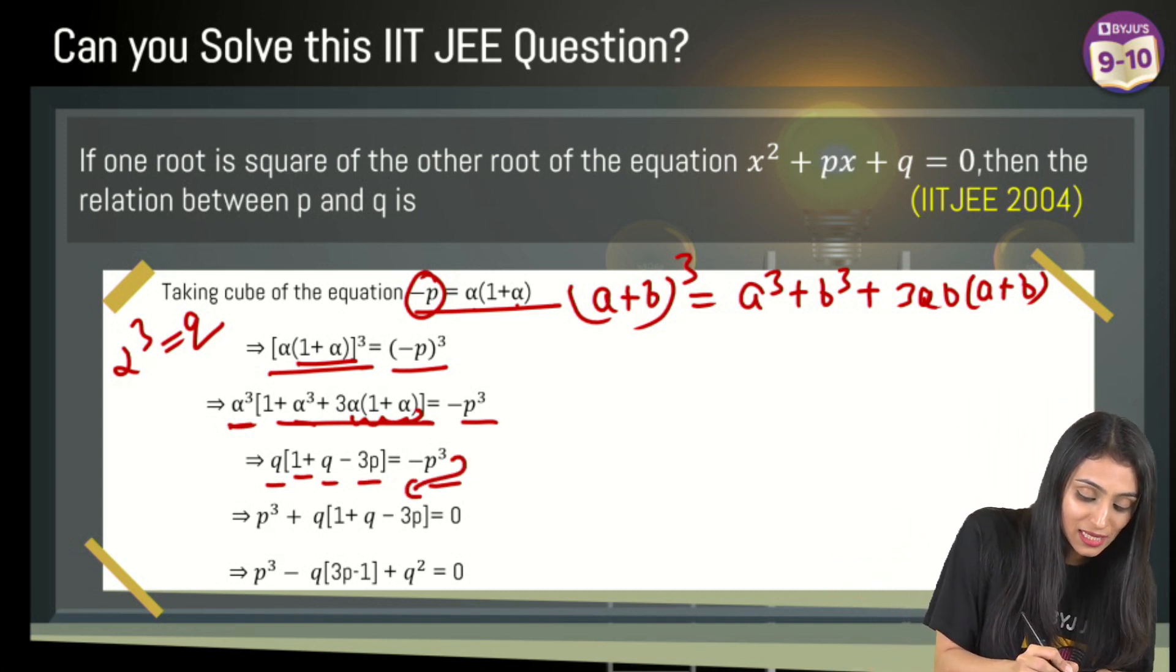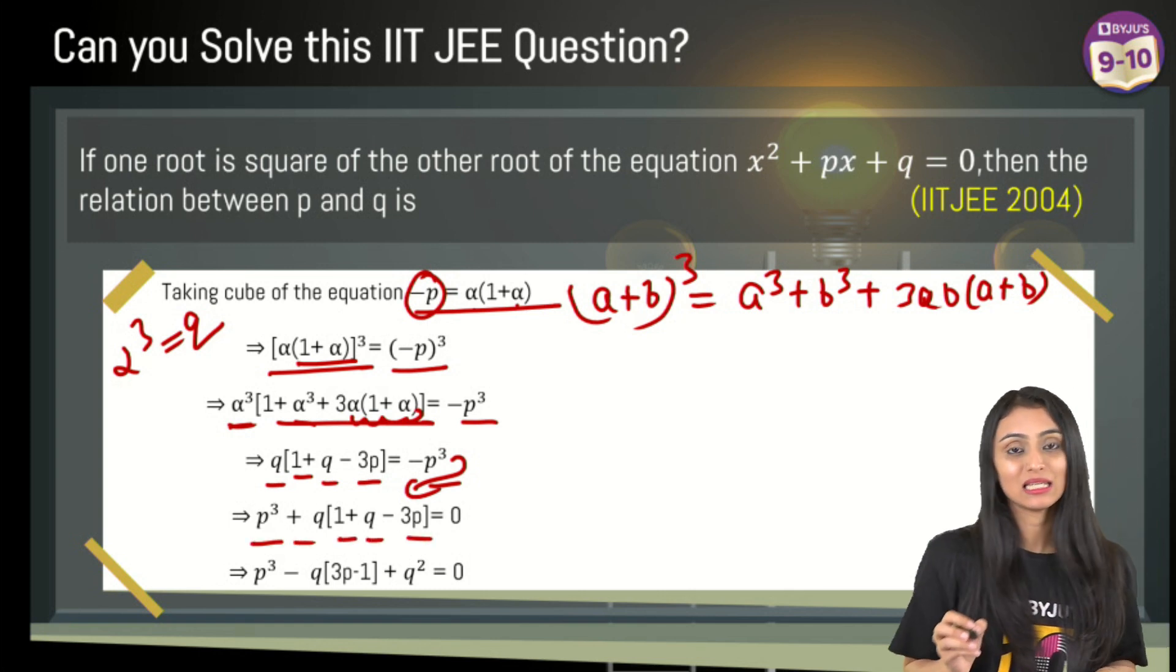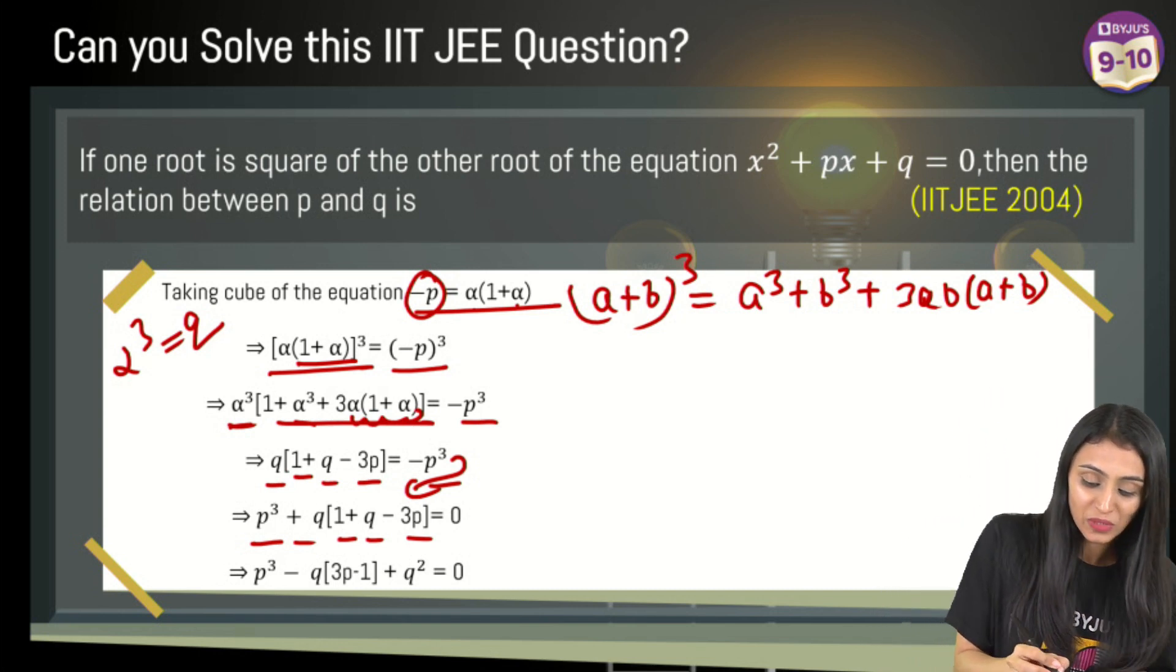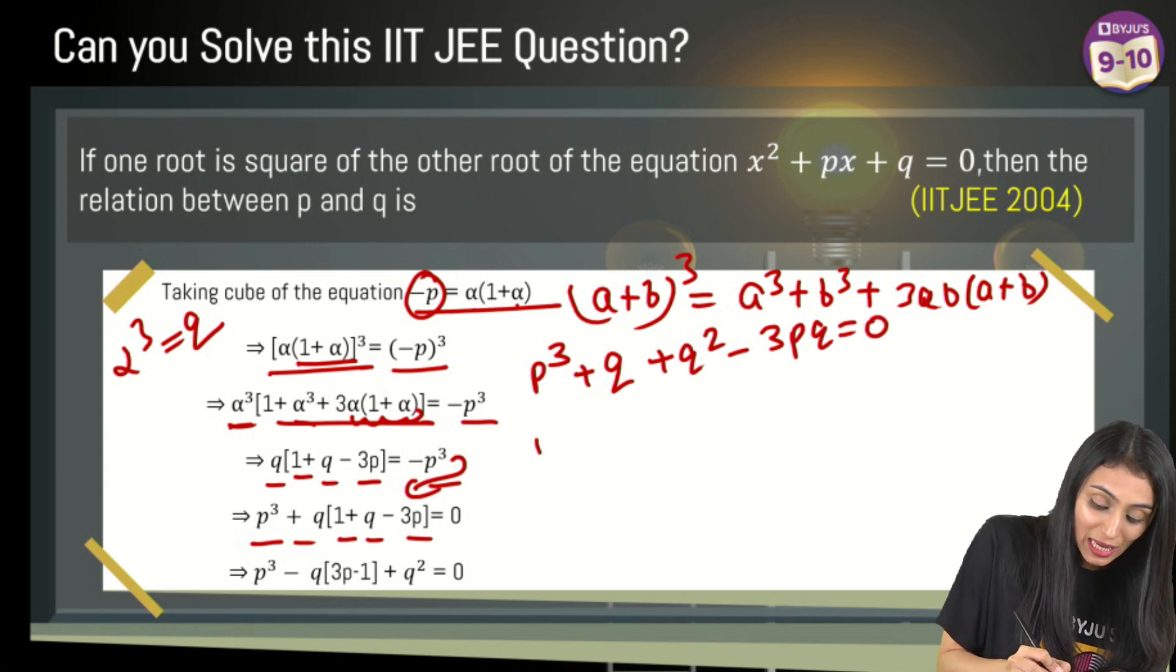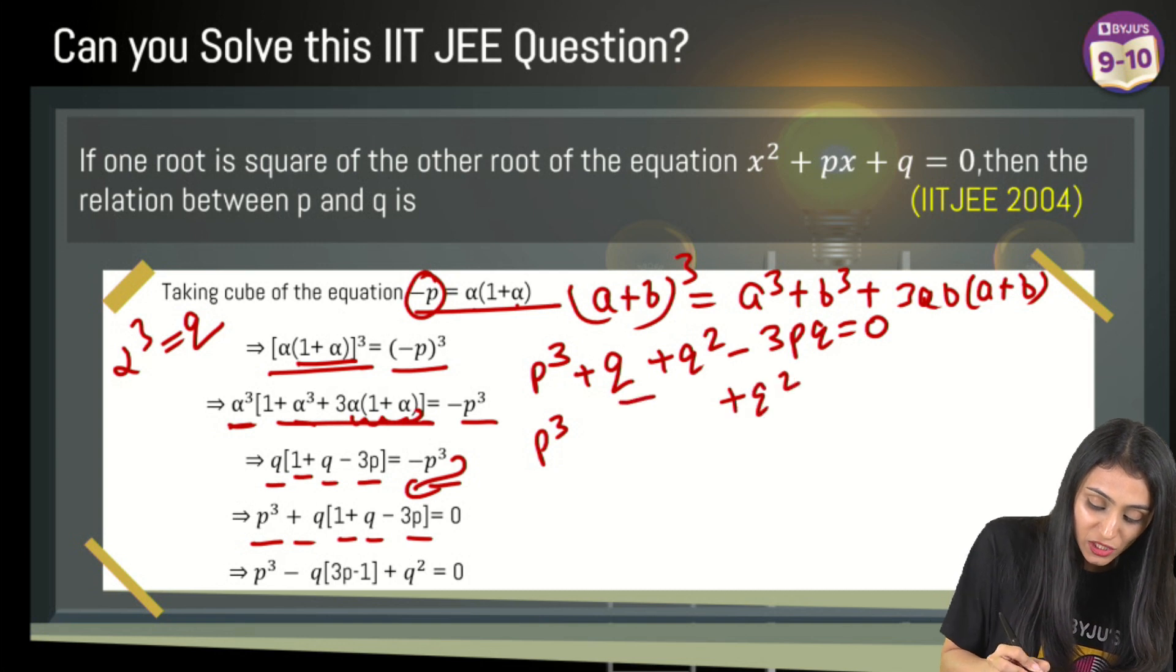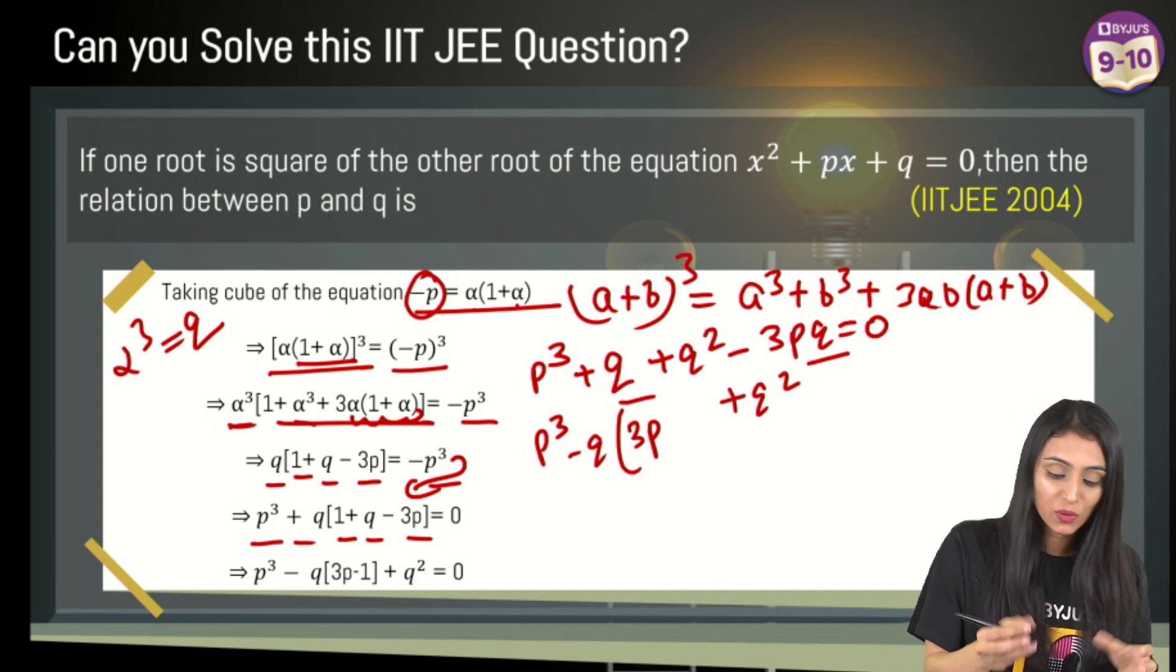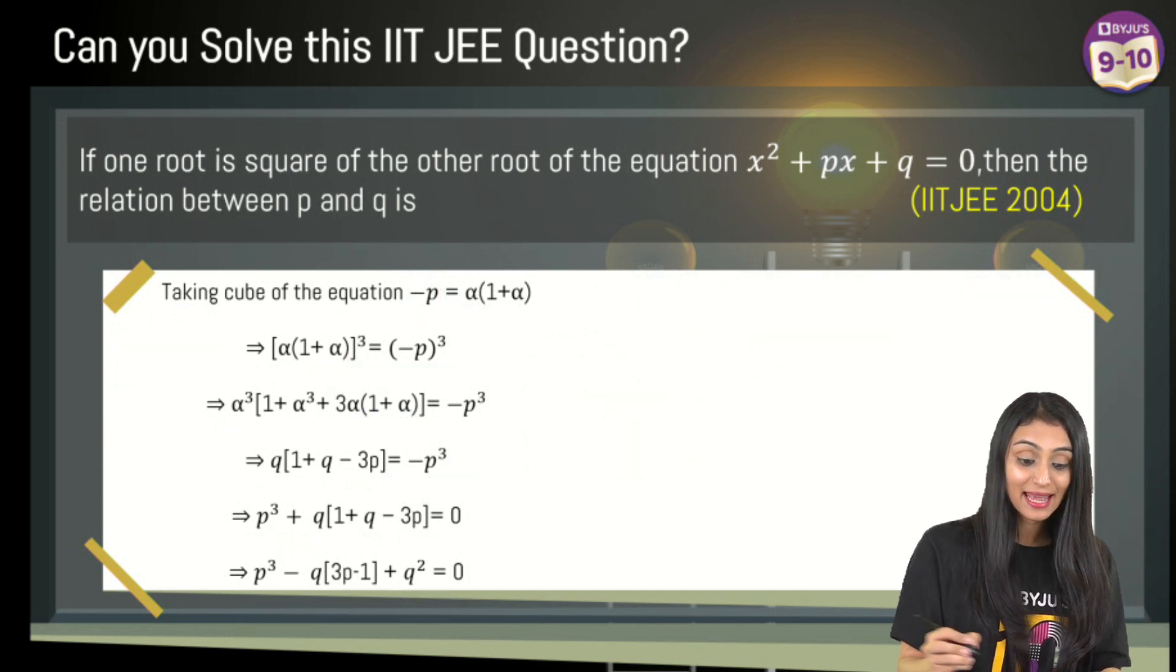Now we just need a little rearrangement. Opening the bracket: p³ + q + q² - 3pq = 0. In the final answer, q² was written aside, so I'll write it separately. From q and 3pq, taking -q common gives 3p. From the remaining q, taking -q common gives -1. We arrive at p³ + q²(3p - 1) = 0.